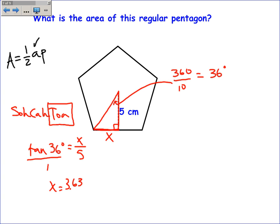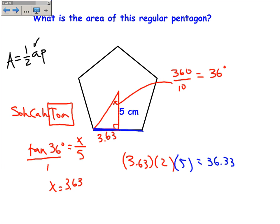To find the perimeter, I take that half-side length of 3.63, double it to get the full side length, then multiply by 5 sides: 3.63 times 2 times 5 equals 36.33 centimeters. So the area is one half times the apothem (5) times the perimeter (36.33), giving an area of approximately 90.82 square centimeters.